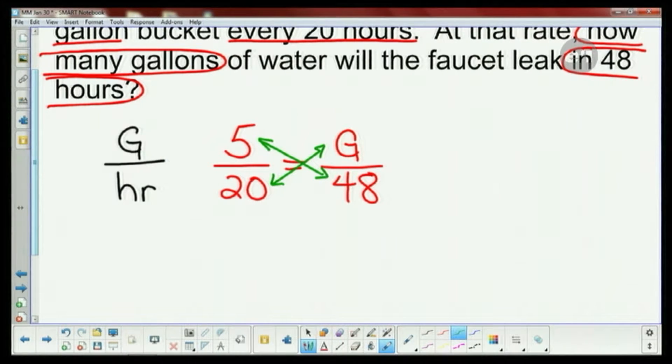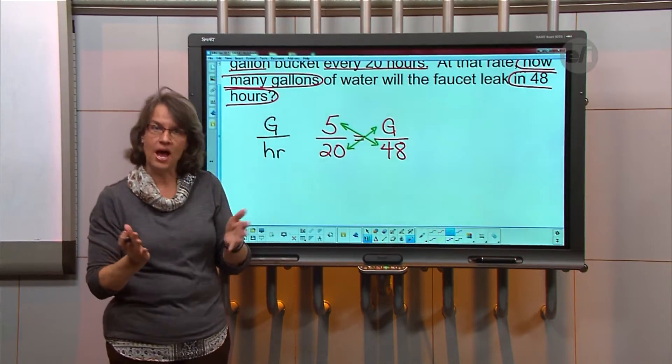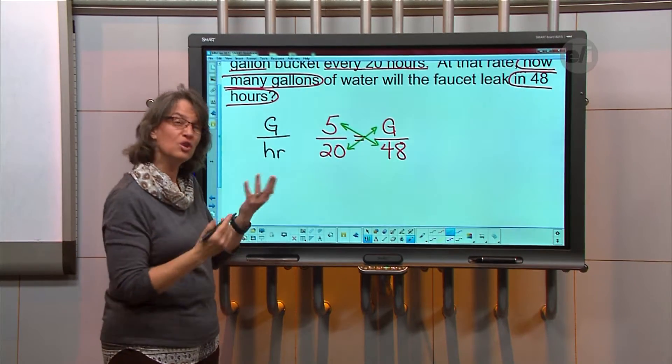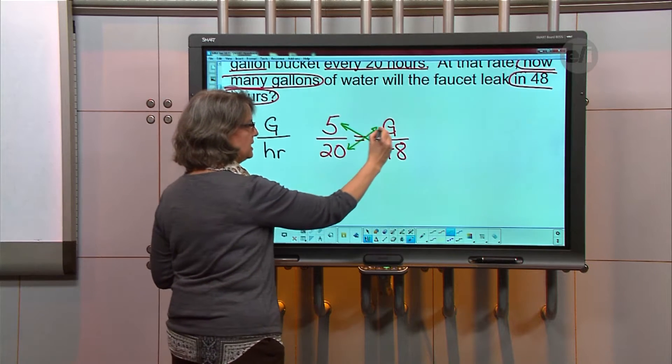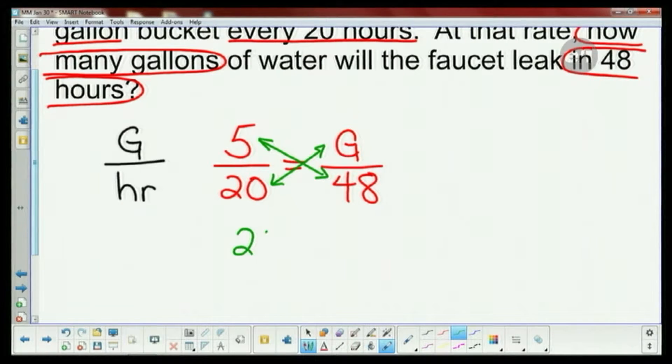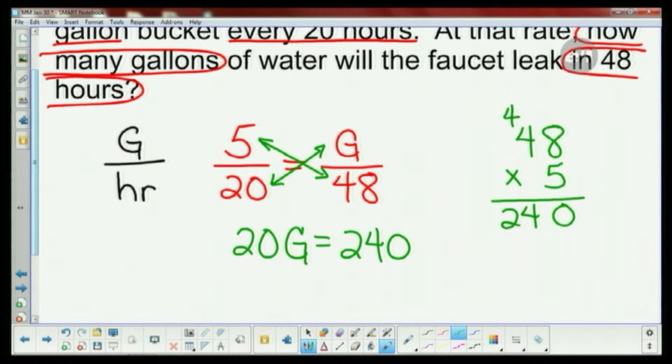All right, so another way you could do this is to actually cross multiply. We're going to multiply this way and this way. Now my students like to have their variables on the left hand side, so we're going to do the same. So 20 times G, we're just going to rewrite it as 20G. And now I've got 48 times 5. Let's do that: 48 times 5. 5 times 8 is 40, carry the 4. 5 times 4 is 20. Add the 4 is 24. So 240.